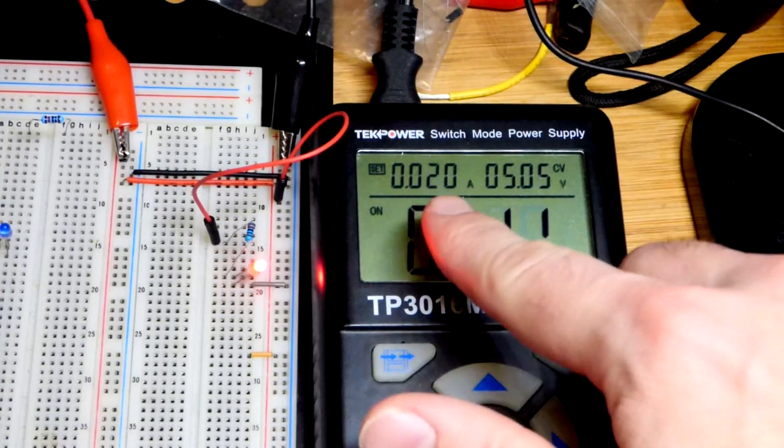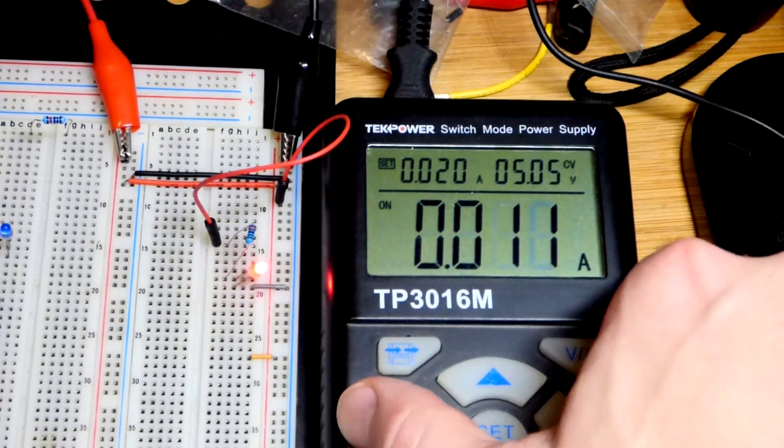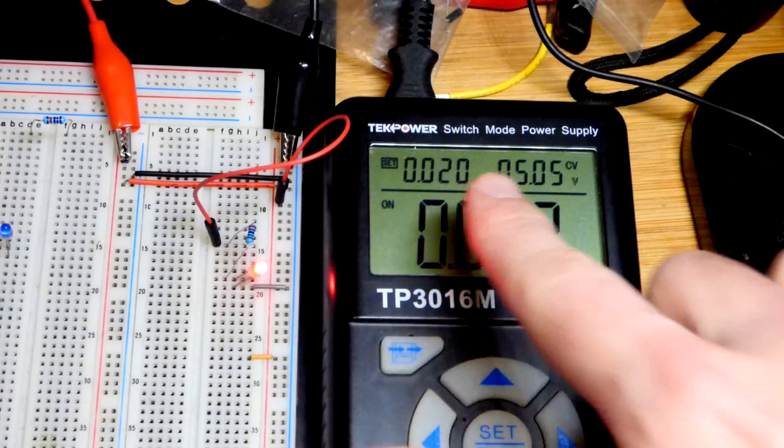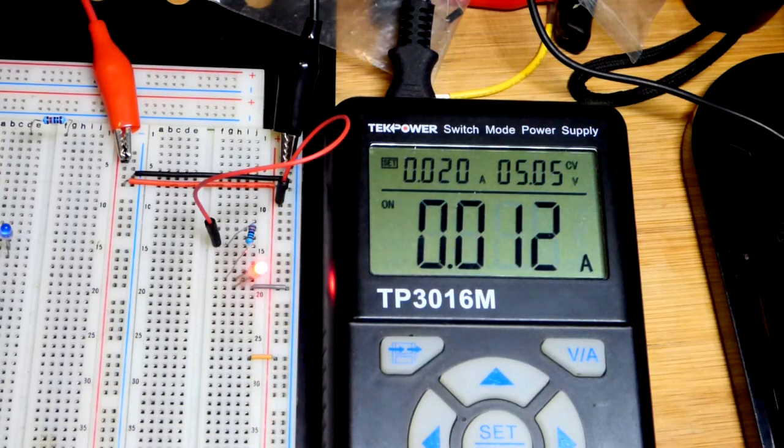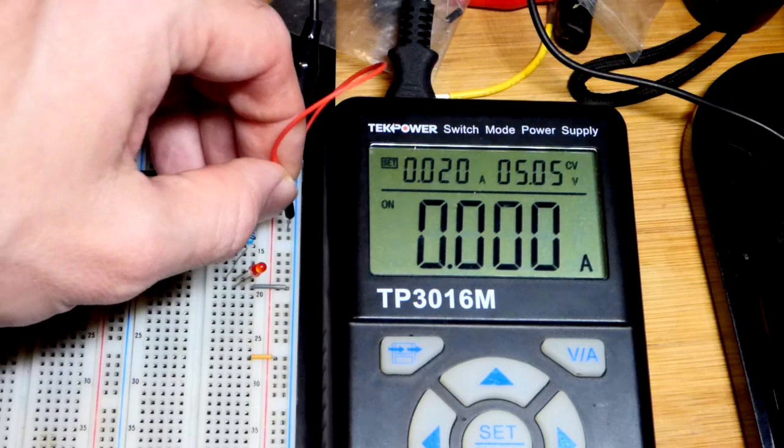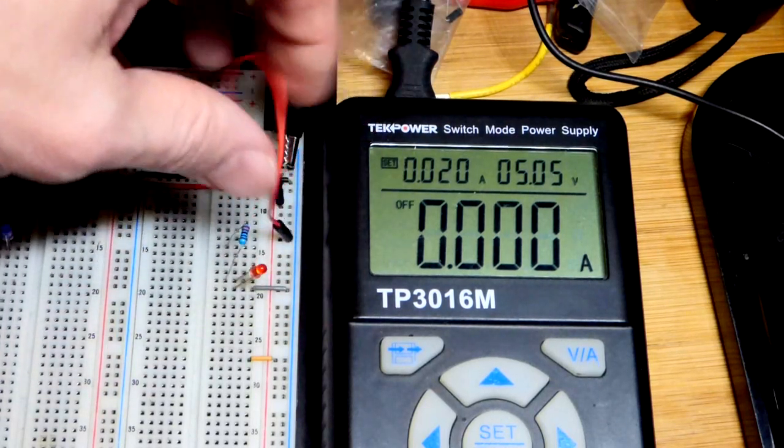So this has current protection. Usually when I'm doing just simple LED circuits, I put 20 milliamps because that's about the maximum you want to put through an LED. So that makes sure I don't get more than 20 milliamps of current.